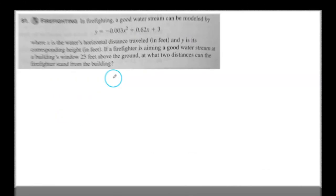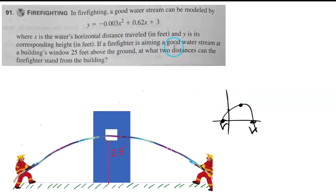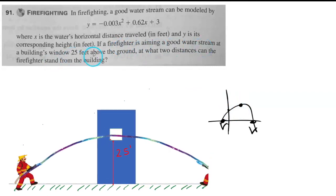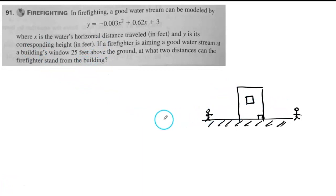Let's work on the second one. This is our second problem, it's another quadratic word problem. Firefighting: a good water stream can be modeled by this function, which is quadratic with a negative coefficient. Therefore, we have some kind of parabola opening down, where x is the water horizontal distance, and y is the height at every single point. The firefighter is aiming a good water stream at a building's window 25 feet above the ground. So let's make a better drawing.